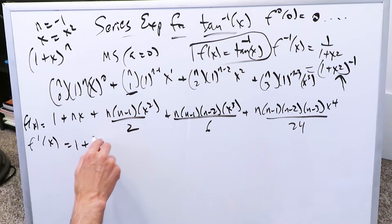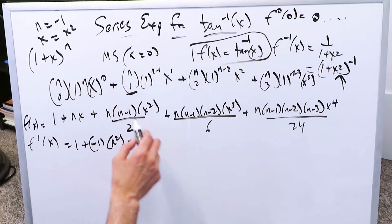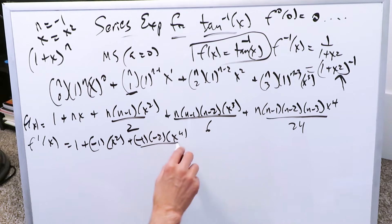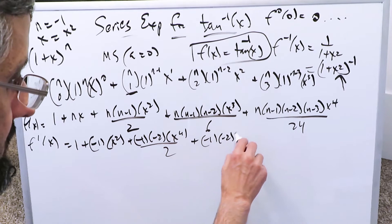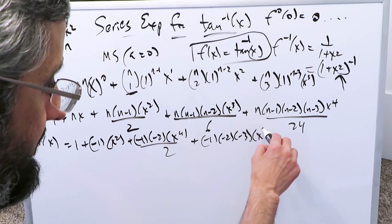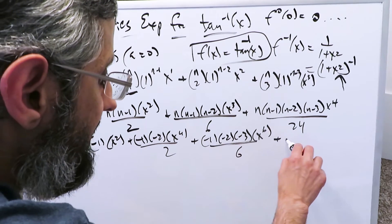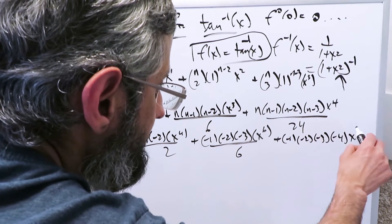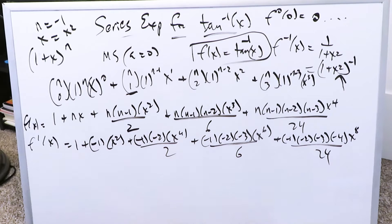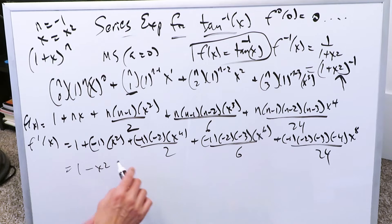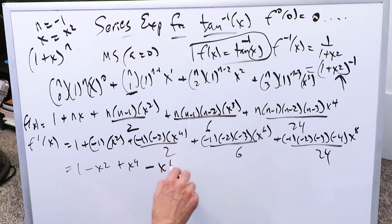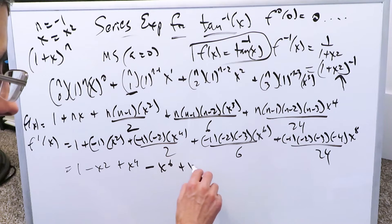Here I have a 1 — it carries through. Here I have minus 1 times x squared. Here I have n minus 1, which is minus 2, times x squared squared, which is x to the 4 over 2. Here I have minus 1 times minus 2 times minus 3 times x squared cubed, which is x to the 6 over 6. Plus minus 1 times minus 2 times minus 3 times minus 4 times x squared to the 4th, which is x to the 8 over 24. Simplifying gives you 1 minus x squared plus x to the 4 minus x to the 6 plus x to the 8 onwards. This represents your first ordered derivative.